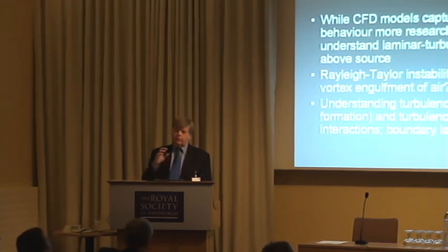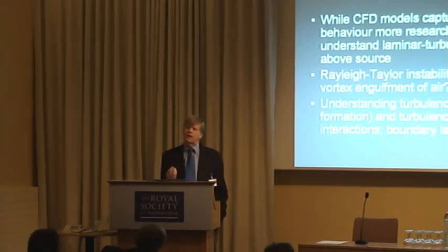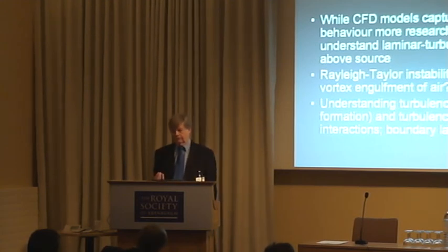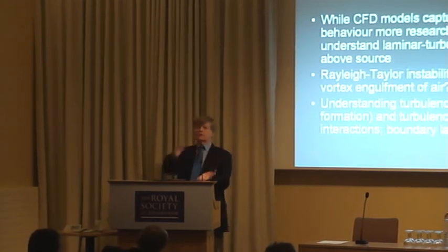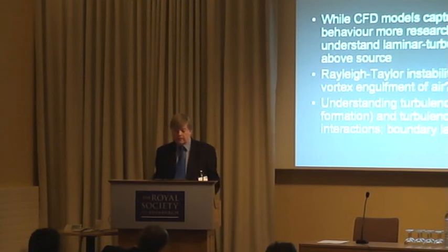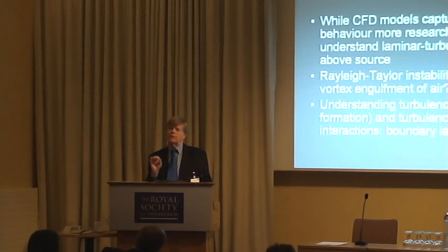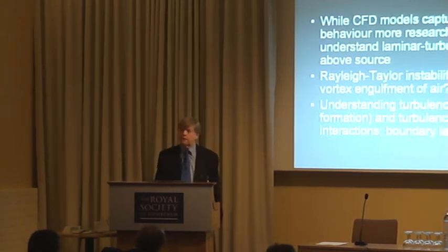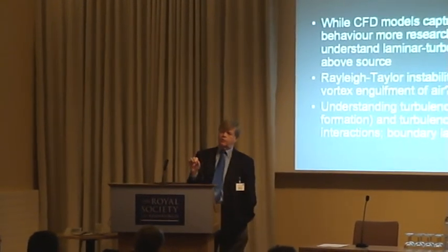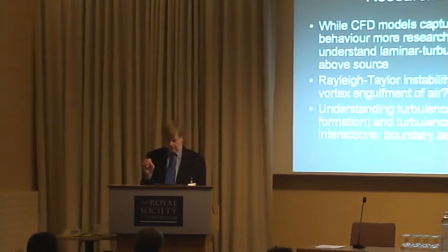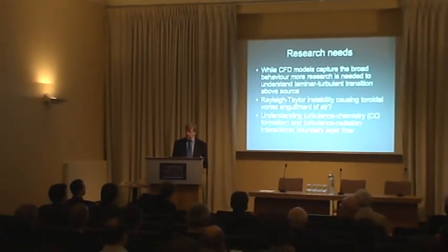Models capture pretty well the mechanics of the problem. But there's something funny going on down at the source. What you've got there is hot gases beneath cold gases where they're wanting to turn over. There is a toroidal vortex being generated down there, and I don't think we fully understand whether our codes are reproducing that properly. This might be rather arcane, and it might not matter if you're out there in practice. But it's very important that we understand the physics of this if we are to have full confidence in the tools that we have.